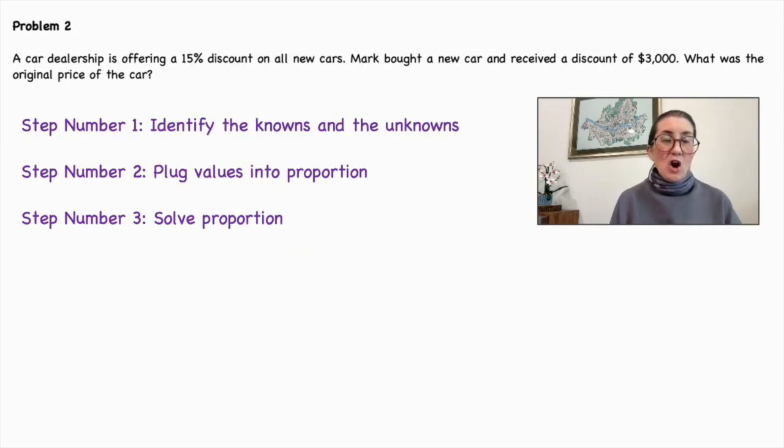Problem number two, a car dealership is offering a 15% discount on all new cars. Mark bought a new car and received a discount of $3,000. What was the original price of the car? Step number one, identify the knowns and unknowns.